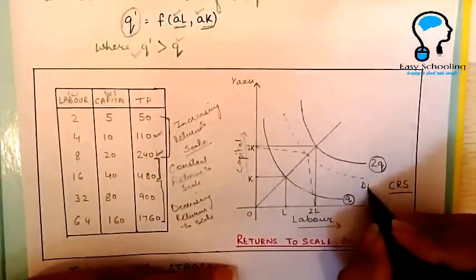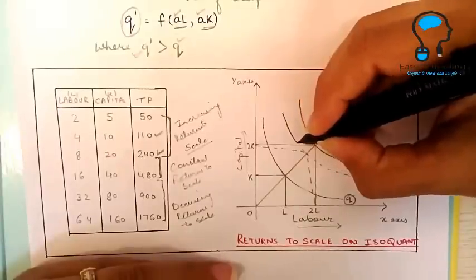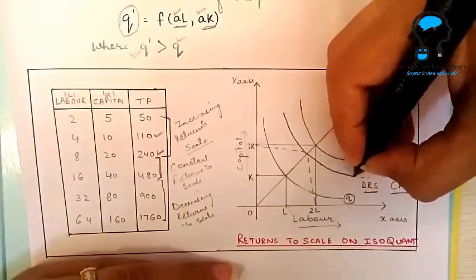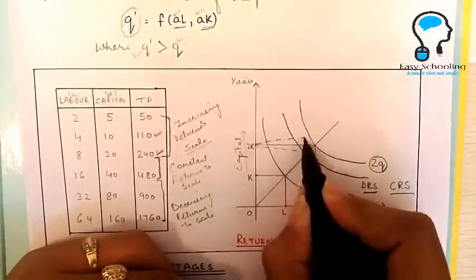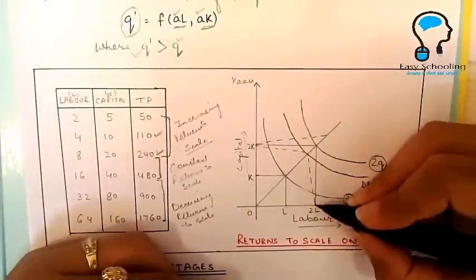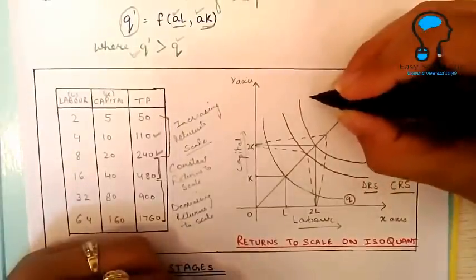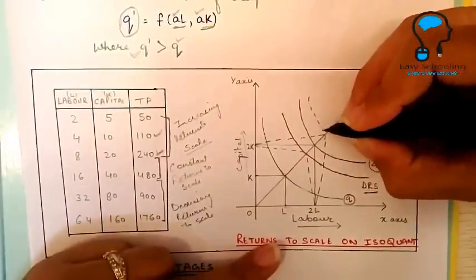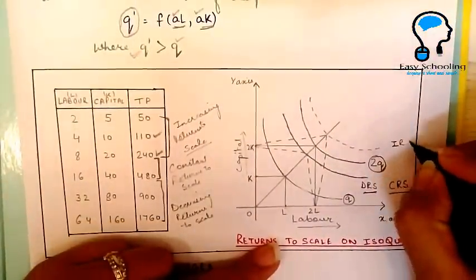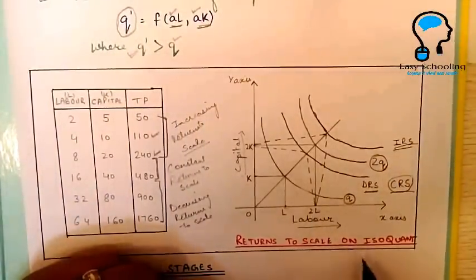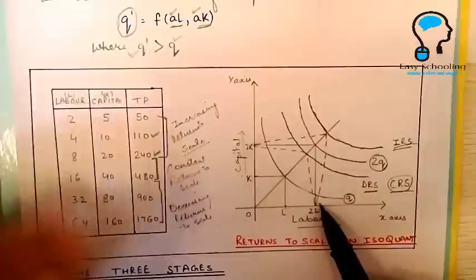There is also a situation of Decreasing Returns to Scale, where the increase in output is less than the increase in input. And there is a situation of Increasing Returns to Scale, where the increase in output is more than the increase in input. This is how you can show the three stages of the Law of Returns to Scale with the help of an isoquant curve.